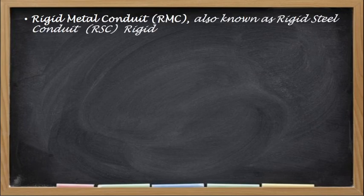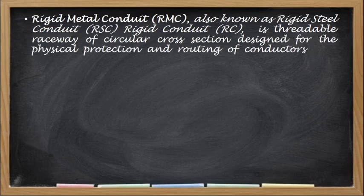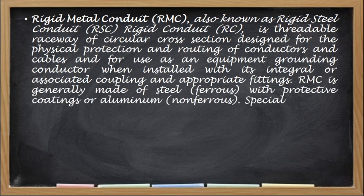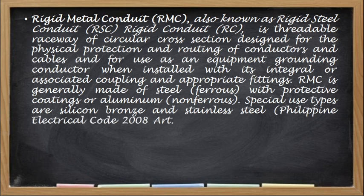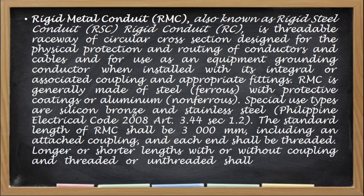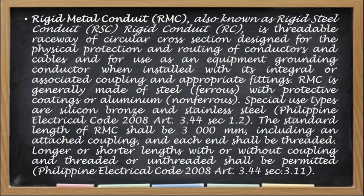The first type is the Rigid Metal Conduit or RMC, also known as the Rigid Steel Conduit or the Rigid Conduit. It is a threadable raceway of circular cross-section designed for the physical protection and routing of conductors and cables, and for use as an equipment grounding conductor when installed with its integral or associated coupling and appropriate fittings. RMC is generally made of steel (ferrous) with a protective coating, or aluminum (non-ferrous). Special use types are silicon bronze and stainless steel. The standard length of RMC shall be 3000 mm, including an attached coupling, and each end shall be threaded; longer or shorter lengths with or without coupling, threaded or unthreaded, shall be permitted.